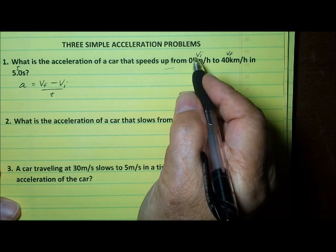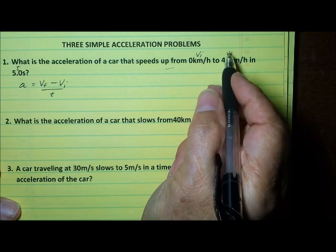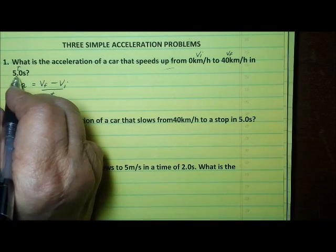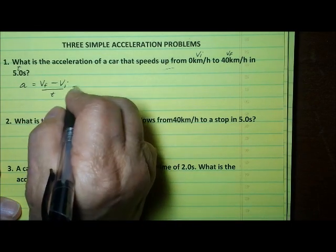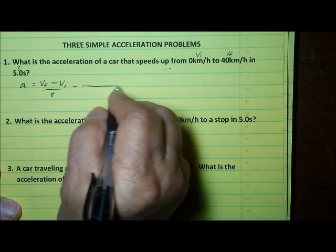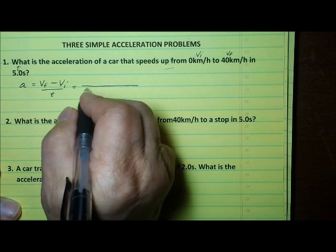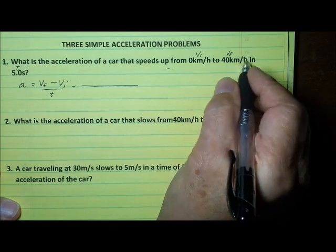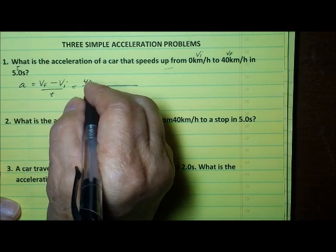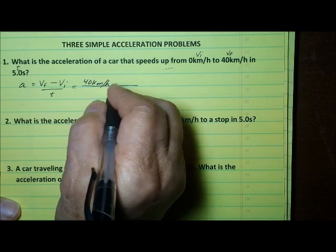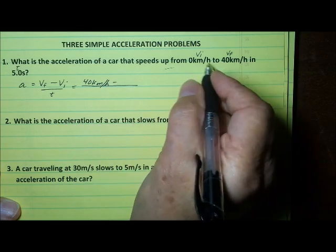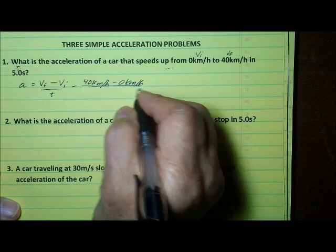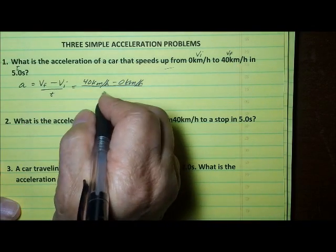We have the initial velocity, zero kilometers per hour, the final velocity, 40 kilometers per hour, and the time, 5 seconds. Now we just plug that into the equation: the final velocity, 40 kilometers per hour, minus the initial velocity, zero kilometers per hour, and divide that by the time, 5 seconds.